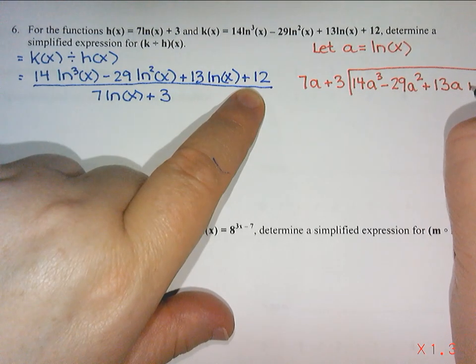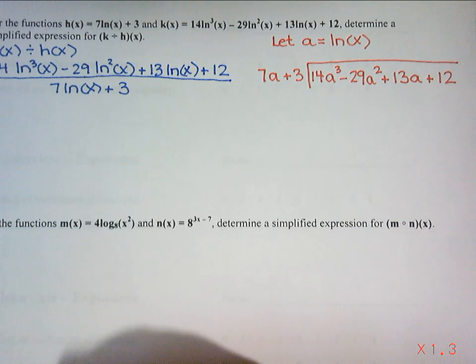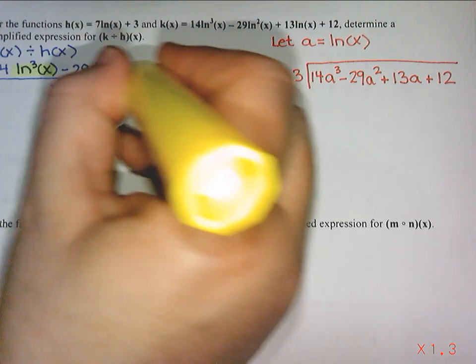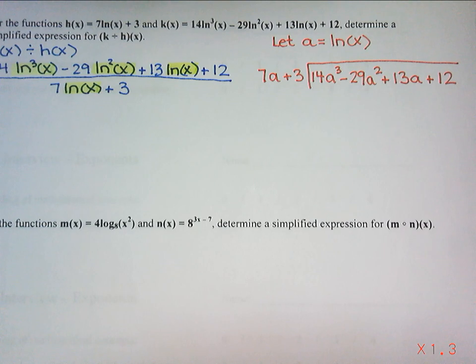And then plus 12. So basically all I did was I took the lns all out, and in their place I just put a lot of a's. Okay, so we are going to divide.